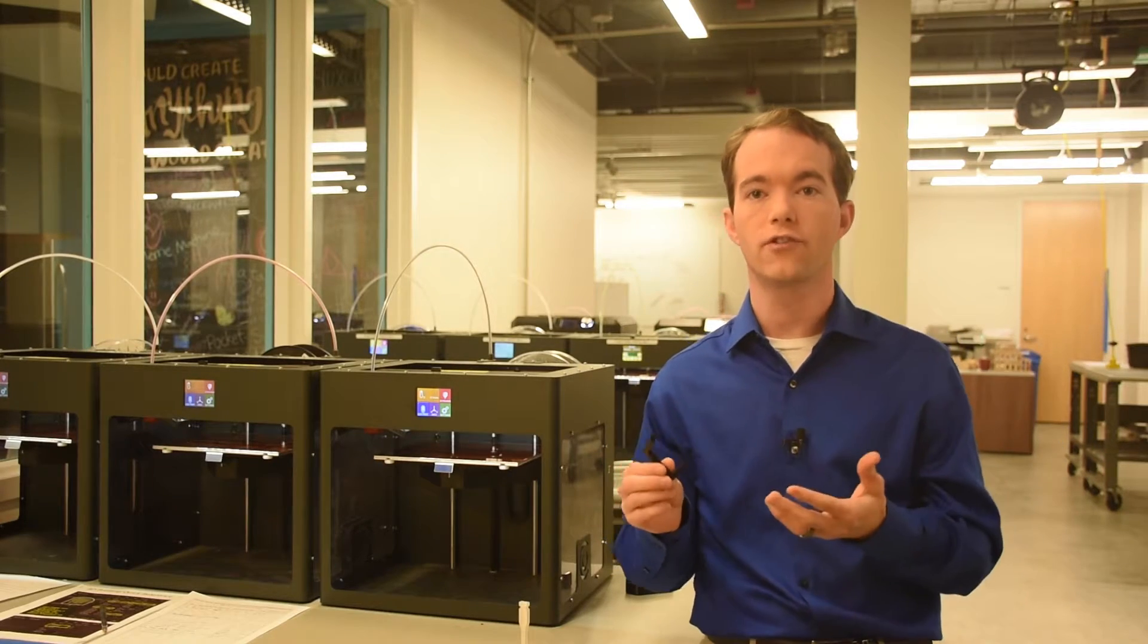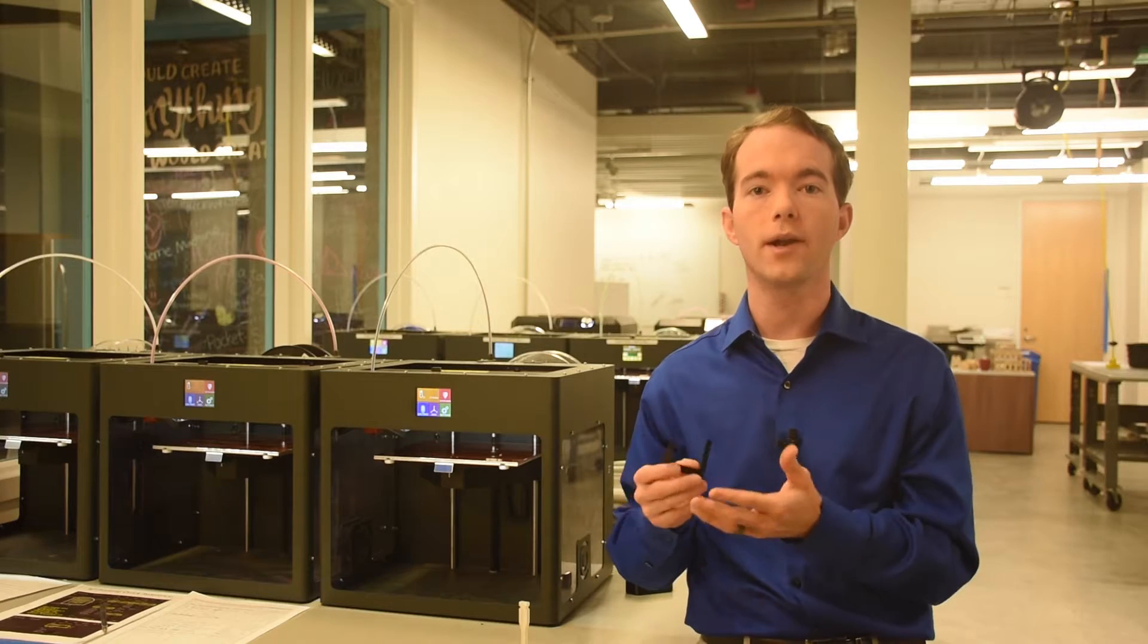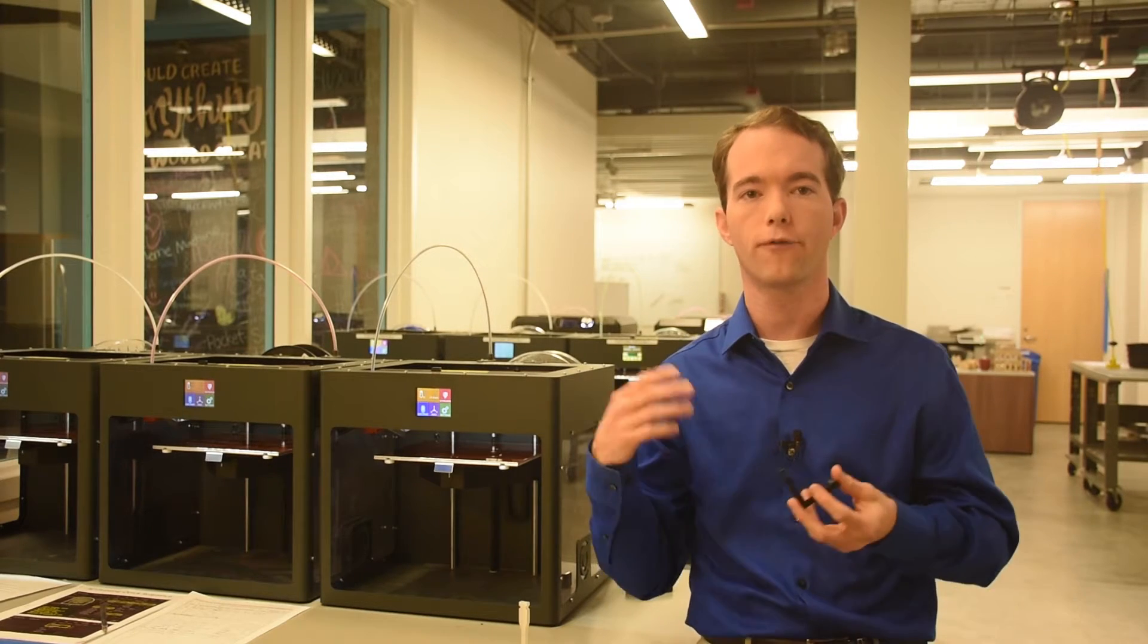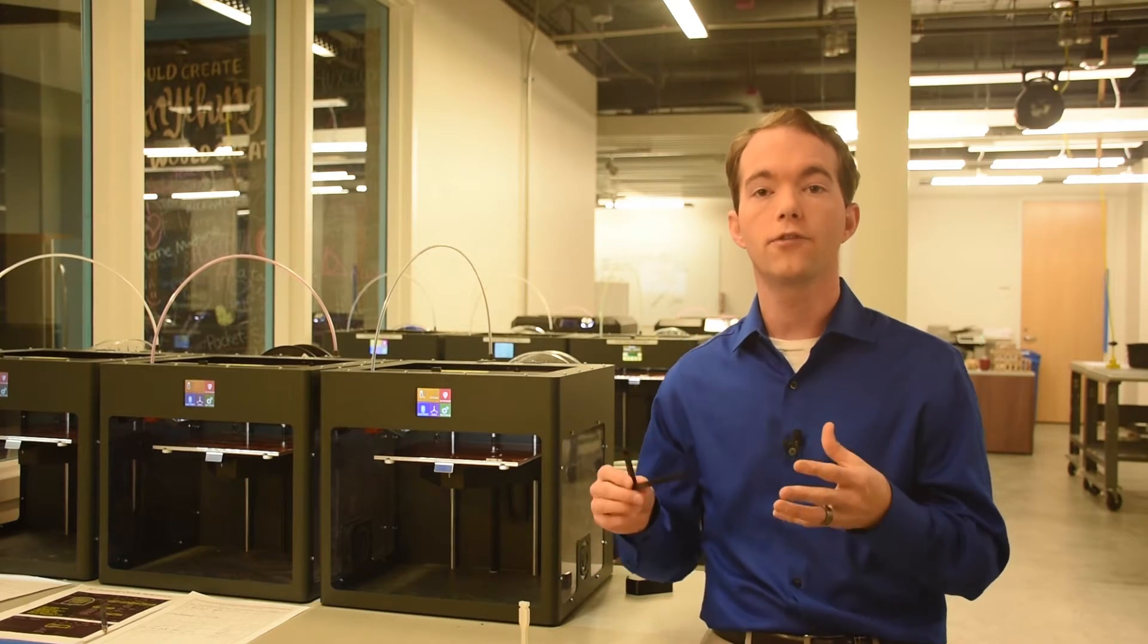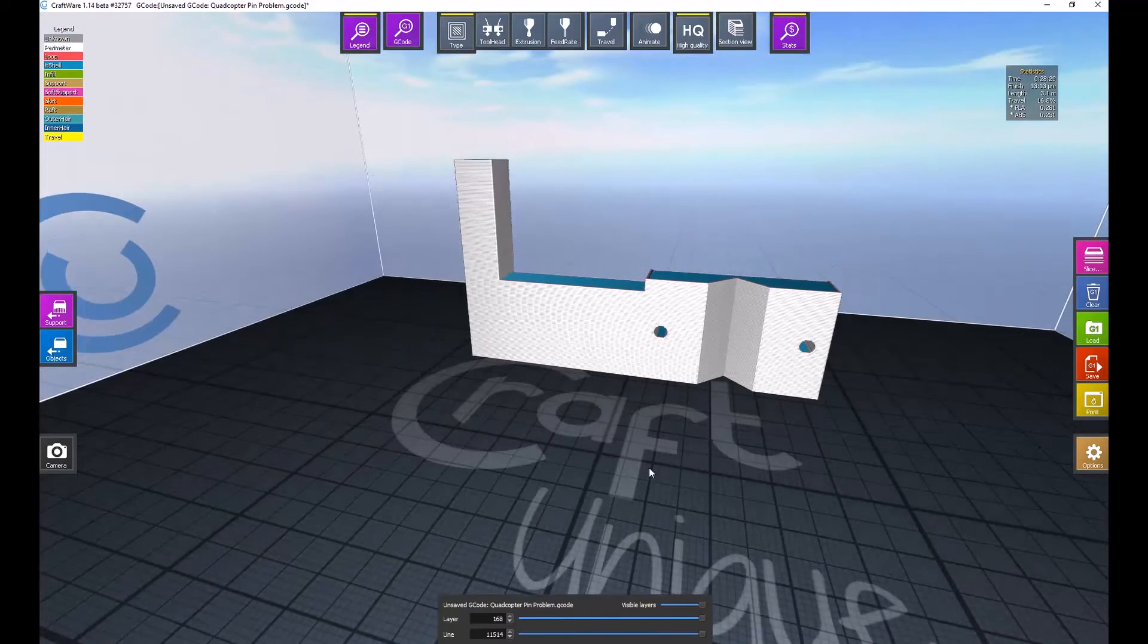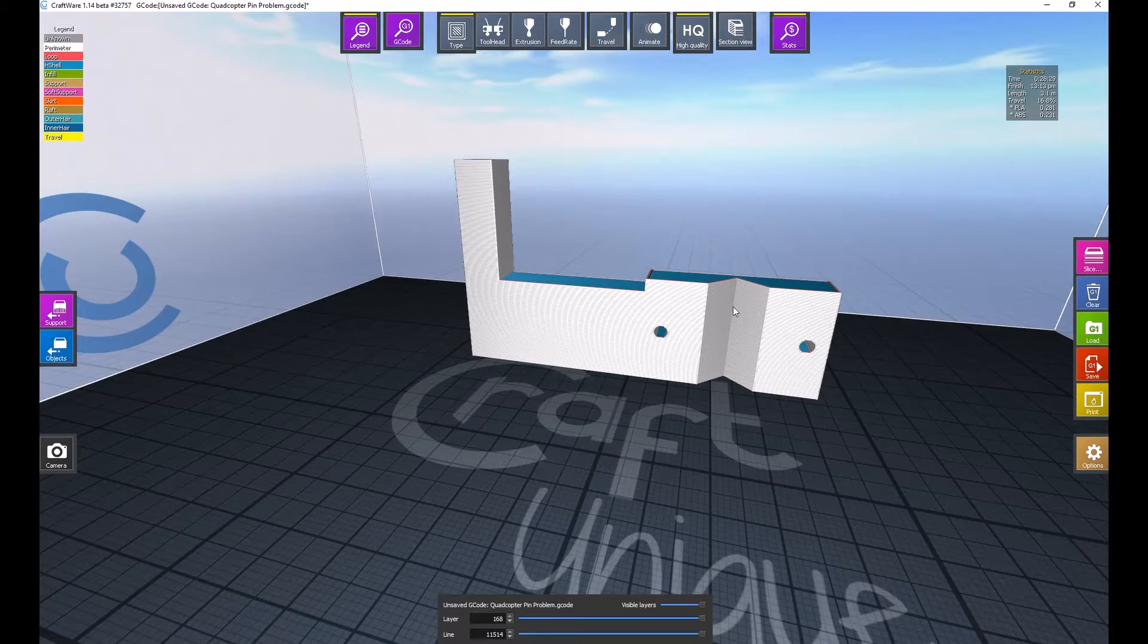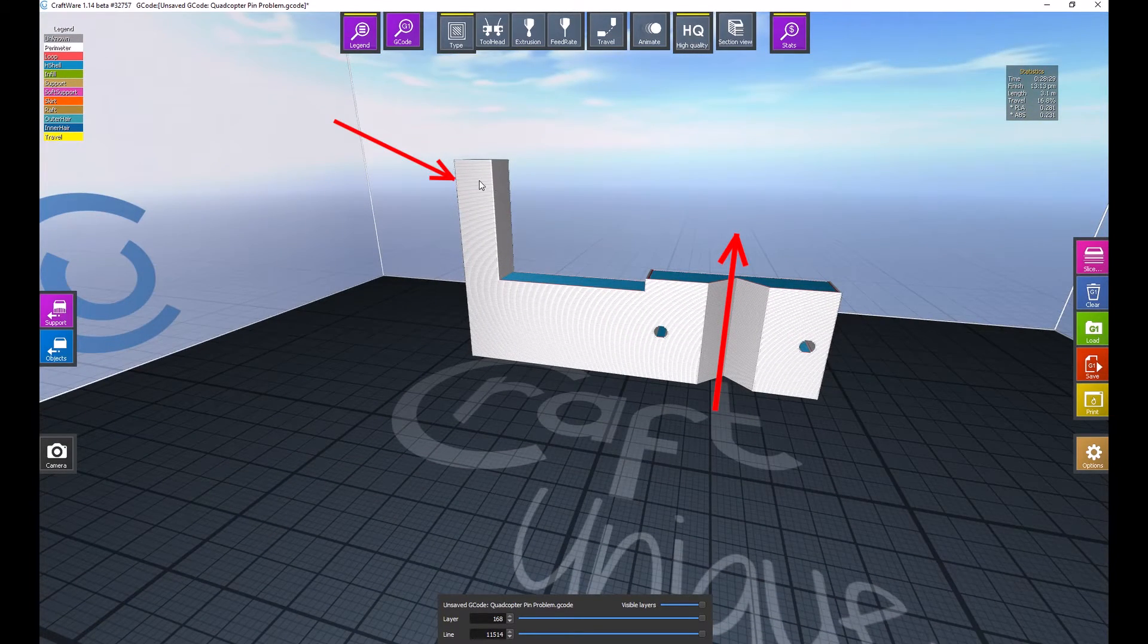I had to advise some students to change their design a while back because they were running into this exact problem with the part for one of their quadcopters. They designed a part that looked like this. It needed to clamp around a strut and then support something over here. Not surprisingly, it snapped right here several times before I was able to advise a design change.